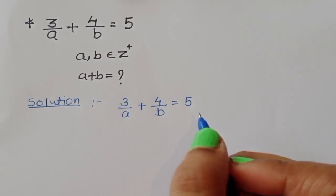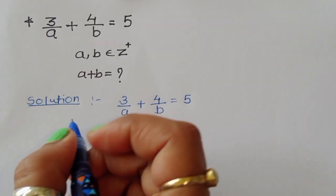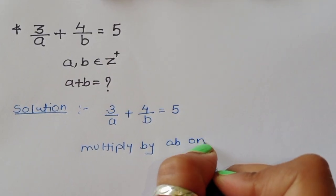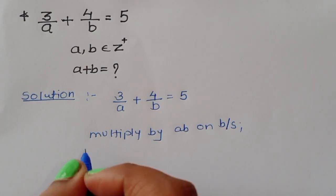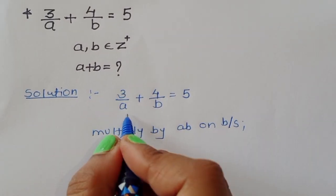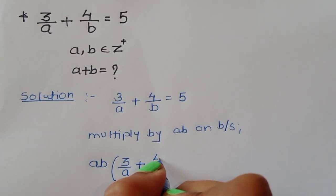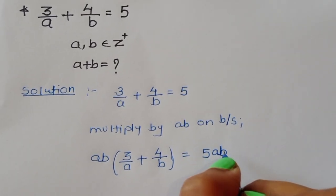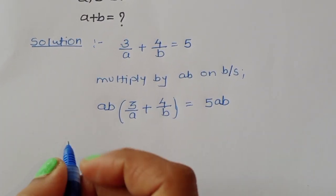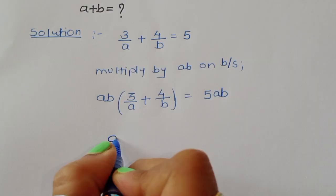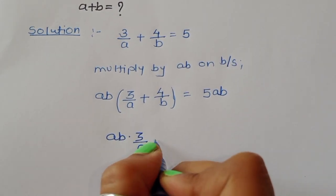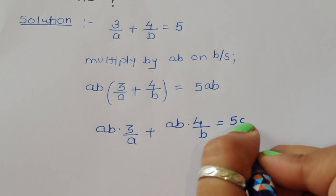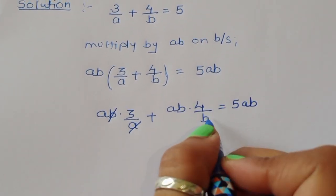We can multiply both sides by ab. Multiplying ab on both sides: ab times (3/a + 4/b) = 5 times ab. So ab times 3/a plus ab times 4/b equals 5ab. Now a cancels from the first term and b cancels from the second term.